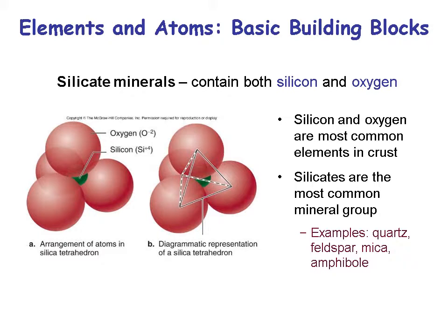Silicates are minerals that contain silica tetrahedrons. The minerals we saw in granite earlier — quartz, feldspar, mica, and amphibole — are all silicates because they all contain silica tetrahedrons in their mineral structures.